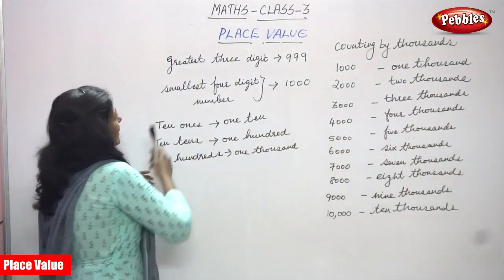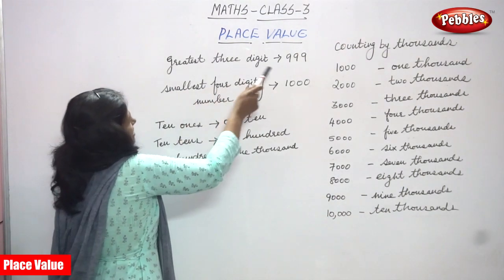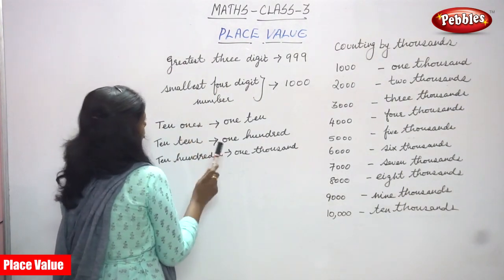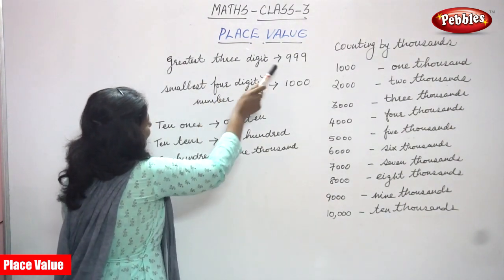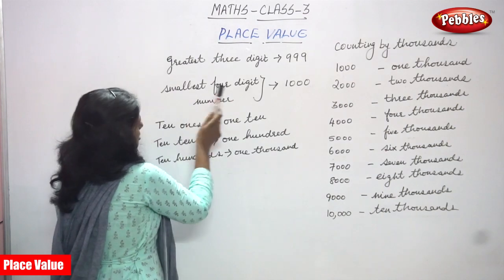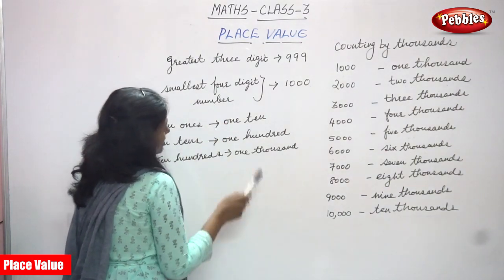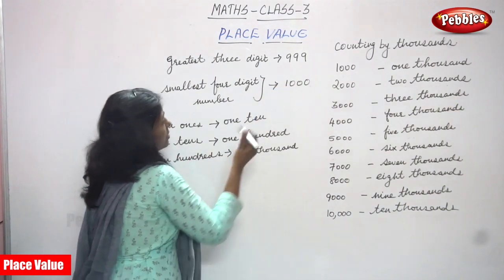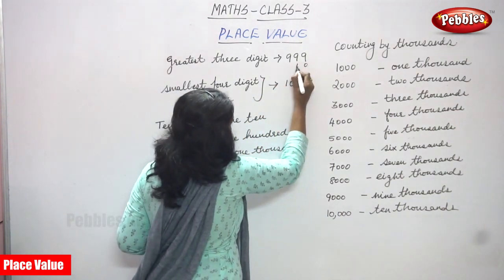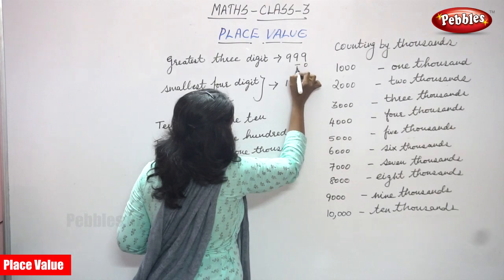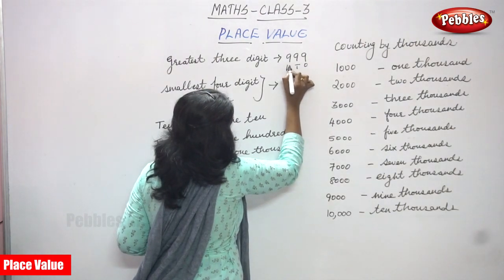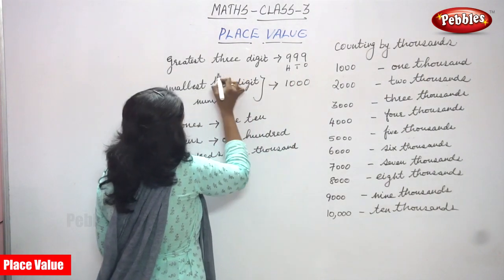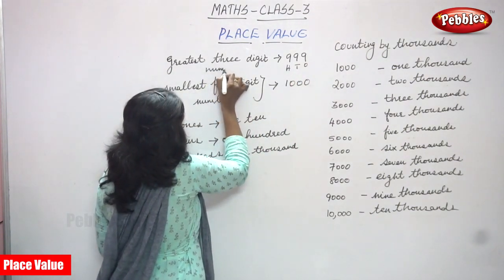Now we are going to see: the greatest three-digit number is 999. You must learn and memorize that. The greatest three-digit number is 999. See — ones, tens, then hundreds. So ones, tens, hundreds — the greatest three-digit number. You must write the number here.